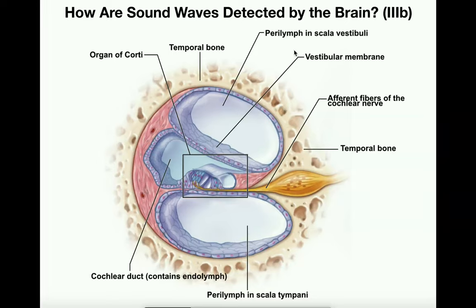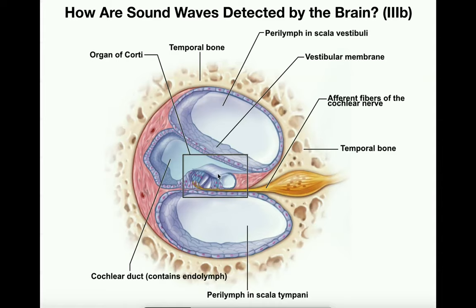Just like we had the vestibular duct on top, the cochlear duct in the middle, and the tympanic duct on the bottom, we have the same arrangement in cross-section. Up here is the perilymph of the scala vestibuli or vestibular duct; down here is the perilymph of the scala tympani or tympanic duct. In the middle is the cochlear duct, which does not contain perilymph — it contains a different fluid called endolymph. There is an organ of Corti for every single frequency; we're just looking at the one for 2,000 hertz.